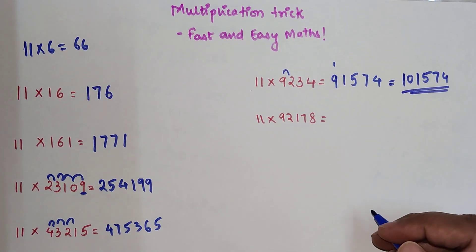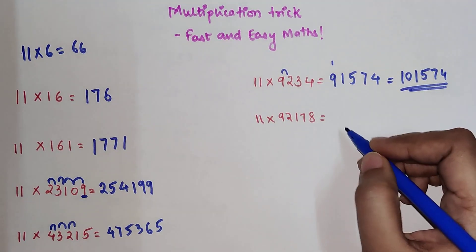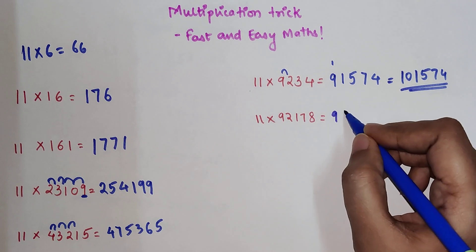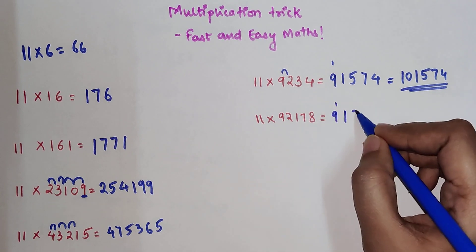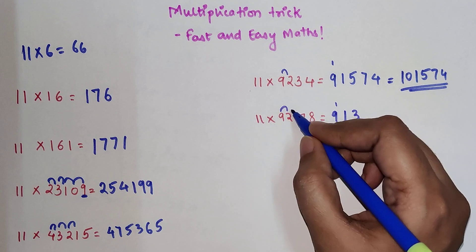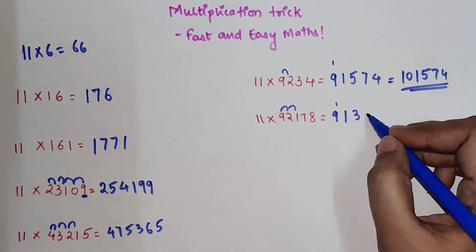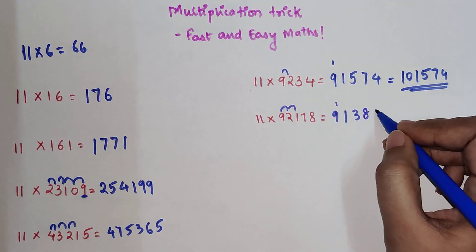For 11 into 92178, it would again be 9, then 11 with 1 carry, then 3. This we finished, this we finished, and 1 plus 7 is 8, 7 plus 8 is 15, so we will take 5 over here and 1 will get added to the number coming after it.